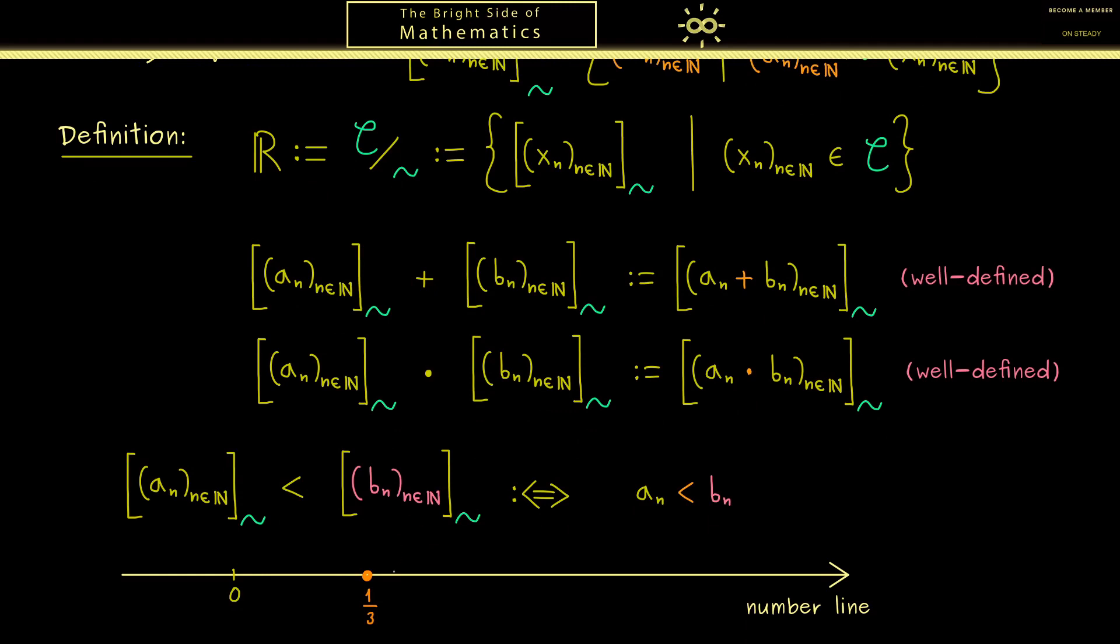For example, our (bₙ)'s here could accumulate around 1/3, and maybe the sequence with (aₙ) has 0 as the limit. But of course, we have infinitely many sequence members here. Therefore, for example, a₄ could lie over here, but still the limit would be 0. Hence, this inequality here should be satisfied only eventually. In other words, we can just ignore finitely many members.